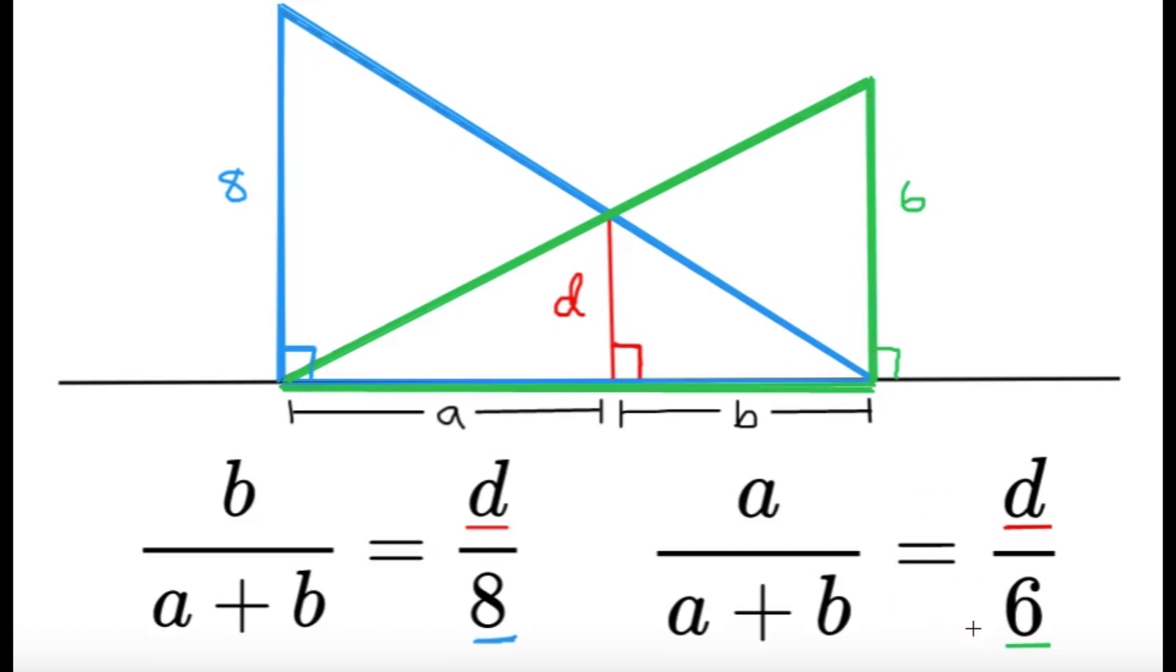Just make sure that when you deal with lengths and corresponding sides, make sure that you are comparing the corresponding sides. Because if you mess up in the correspondence, then you will end up in the wrong ratio and it might confuse you. Just make sure that you are doing the correspondence properly, and you should be okay.